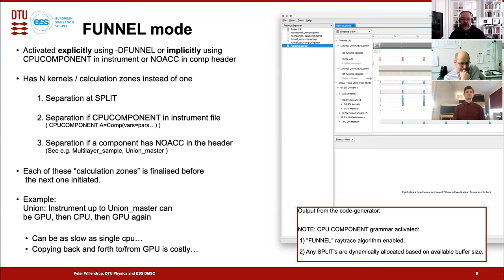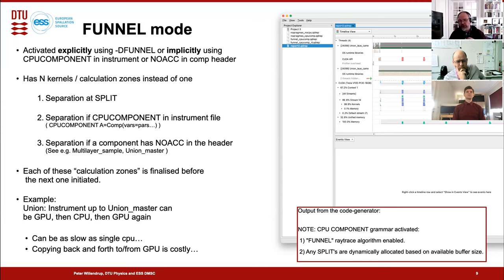The reason we have funnel mode is that, for instance, the Union code is not yet fully ported to GPU. The Union master component where the ray tracing in the Union system happens is currently a CPU component. Another example is the multi-layer sample from Rob Dalgleish at ISIS — this is because it uses an external library in the trace loop.